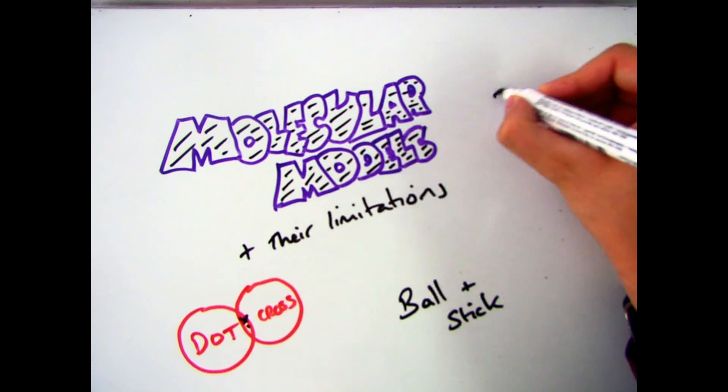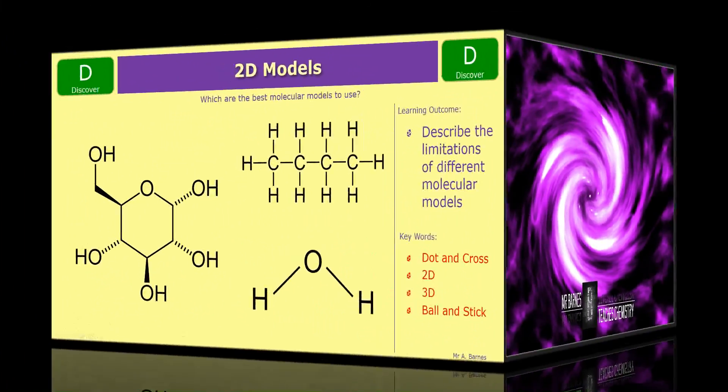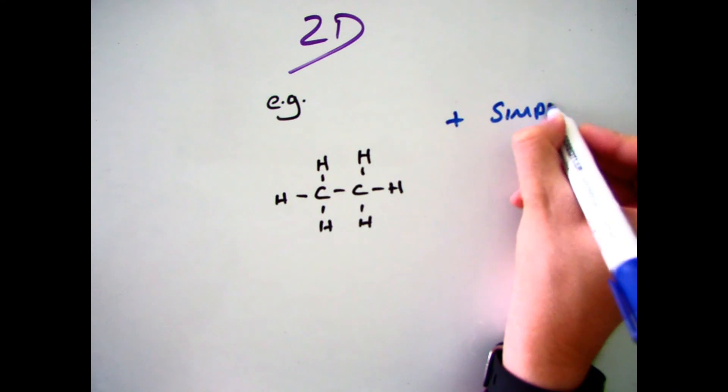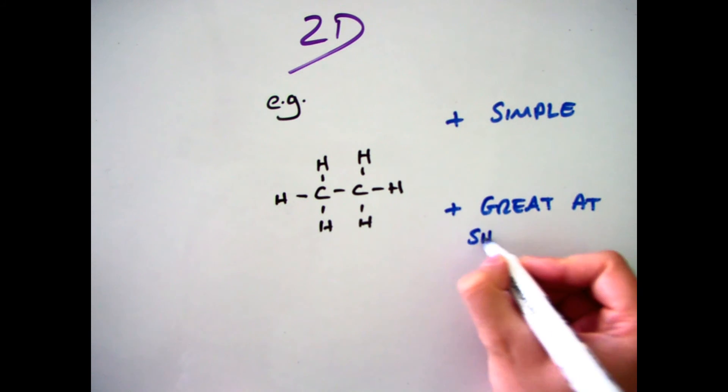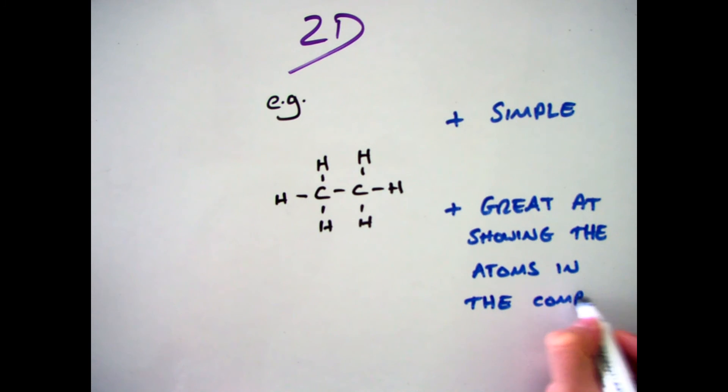So if we start off with 2D models, which you will recognize here—I've got glucose, I've got butane, and I've got water. Now the first thing to know about them is that they're quite simple. They contain just the letters of the atoms involved and the arrangement, which brings us to the second advantage.